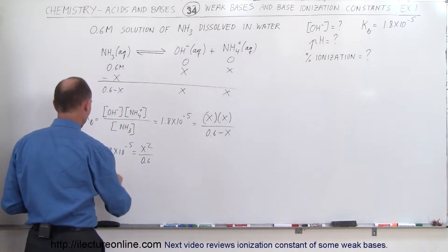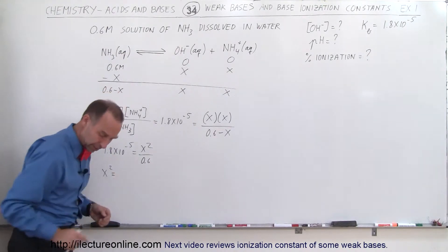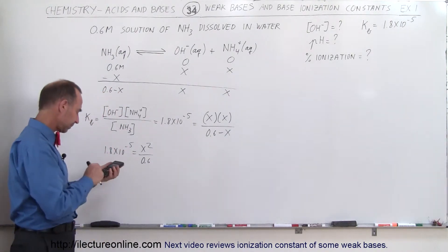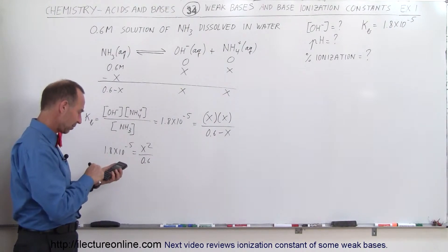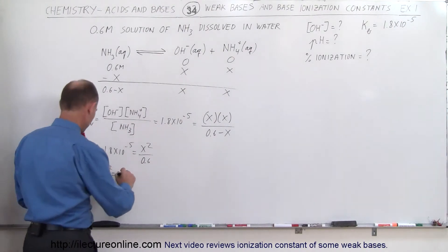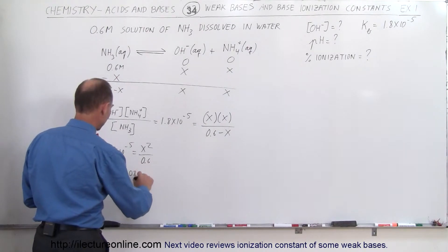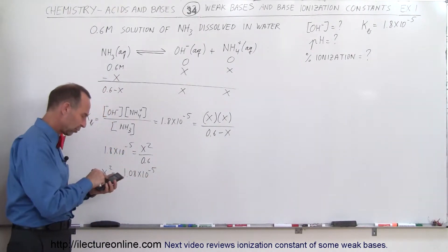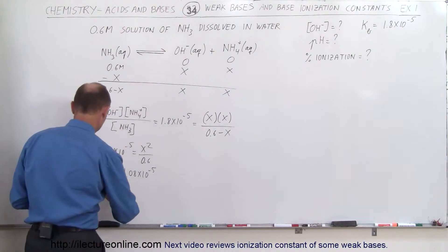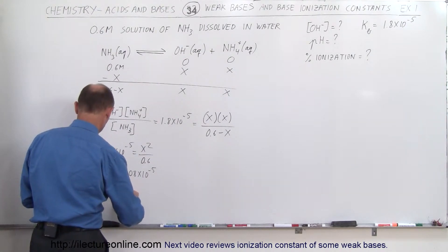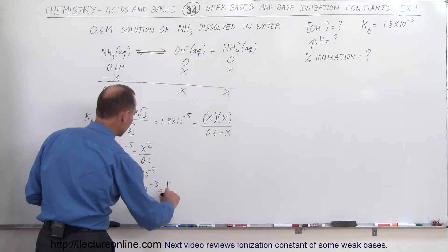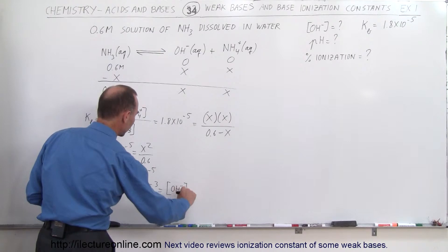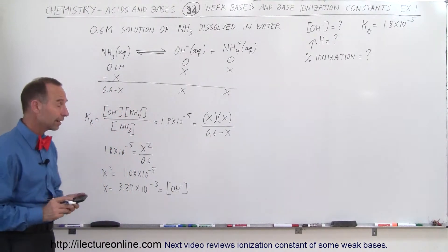So that means that X squared is equal to, and now I need a calculator, 1.8 E to the 5 minus times 0.6 equals, that would be 1.08 times 10 to the minus 5. And so then take the square root of that, and we get X is equal to 3.29 times 10 to the minus 3. And that would be the molar concentration of the hydroxide ion.